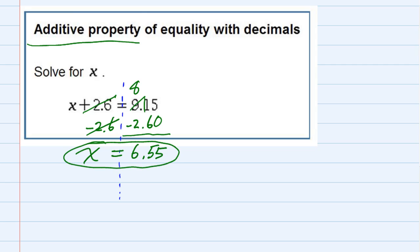Just to make sure, we're going to take that answer and substitute it back in and see what happens. If I replace the x with 6.55, that would mean that when I add the 2.6, I'm supposed to get 9.15.